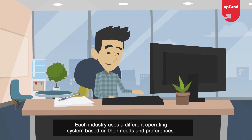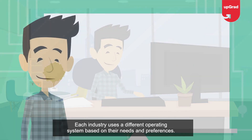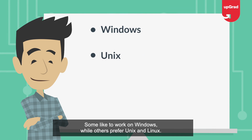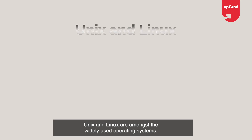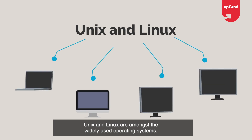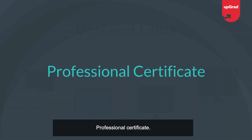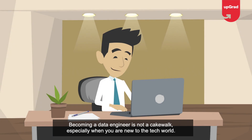Step six: familiarity with different operating systems. Each industry uses a different operating system based on their needs and preferences — some prefer Windows, while others use Unix and Linux. As far as data engineering is concerned, Unix and Linux are among the most widely used operating systems.